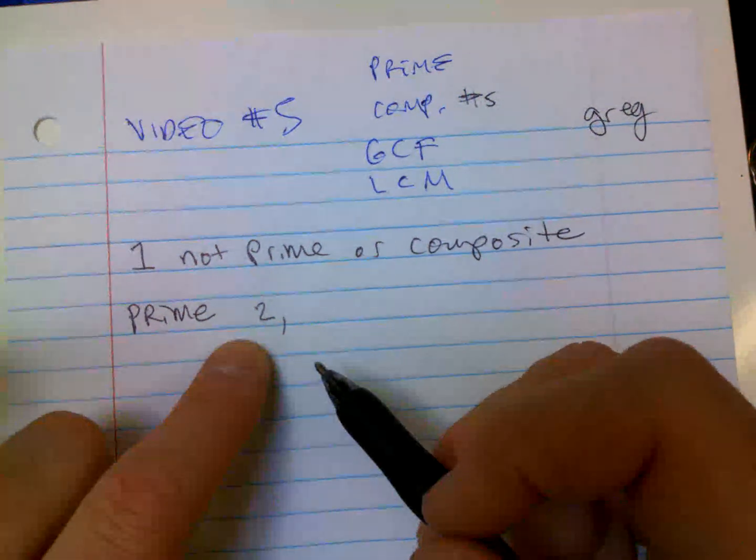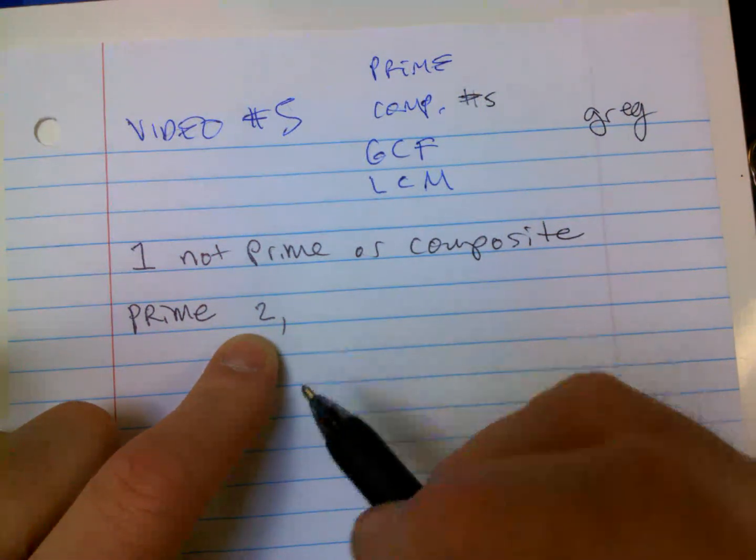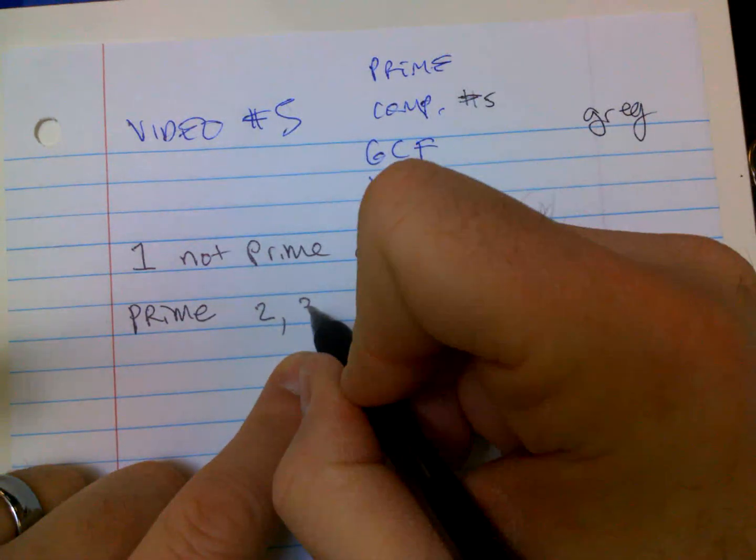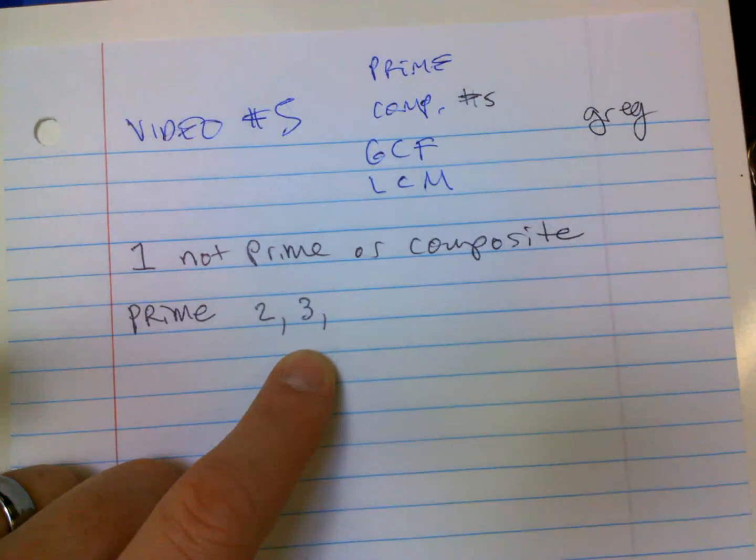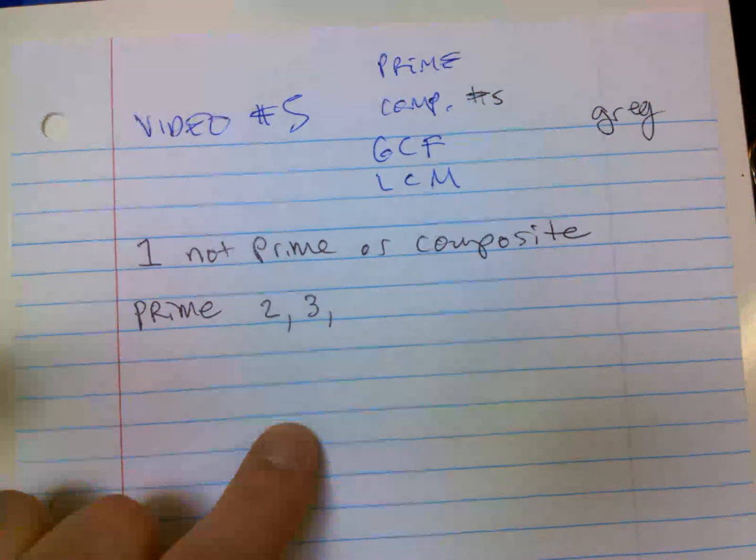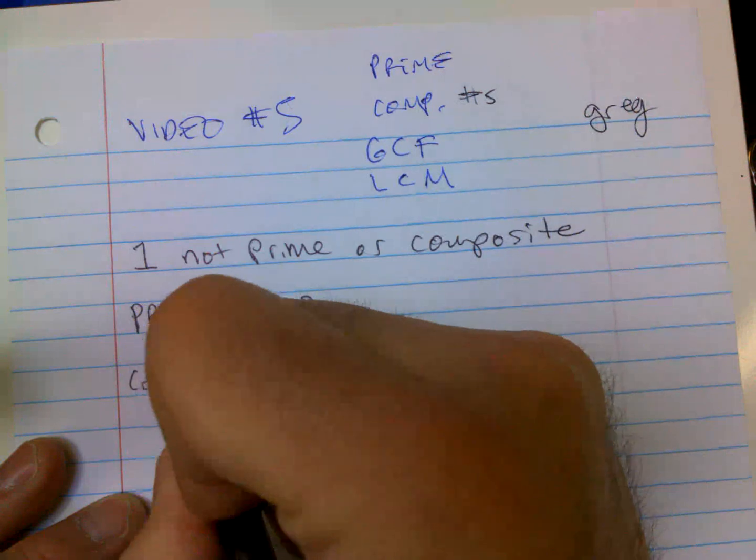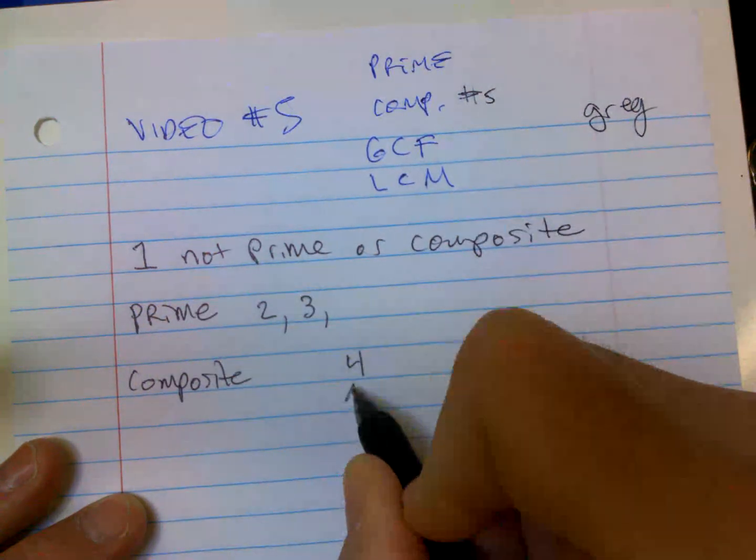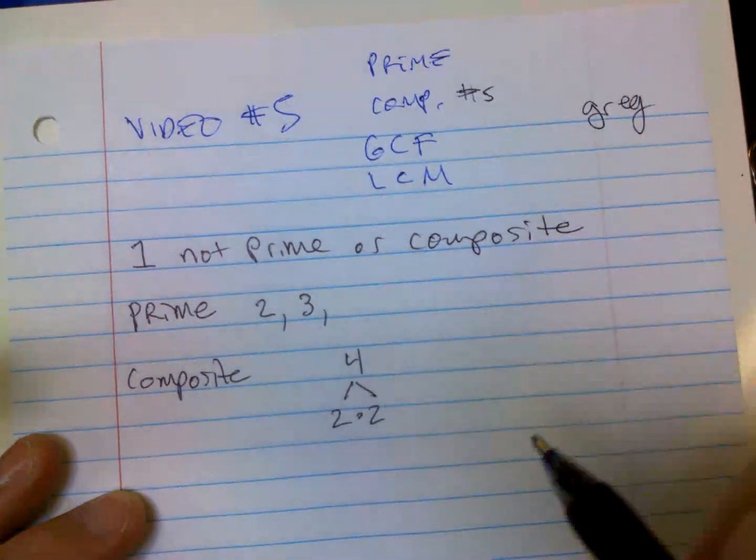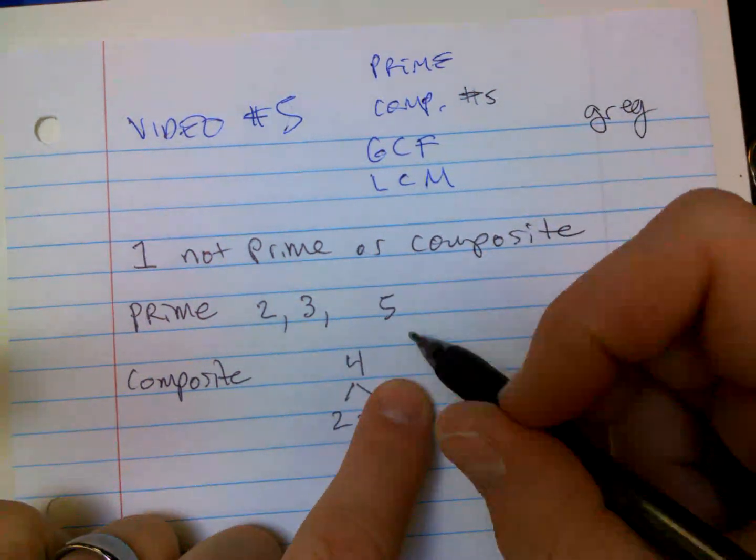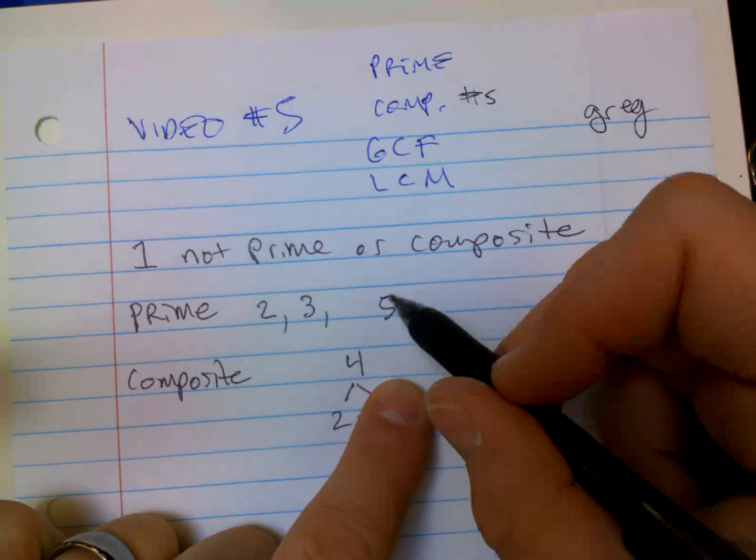Nothing times itself equals two perfectly with whole numbers. Three, nothing times any other number equals three. Four is two times two, so four is composite because you can make it by doing two times two. So five would be the next one - nothing times anything else equals five.